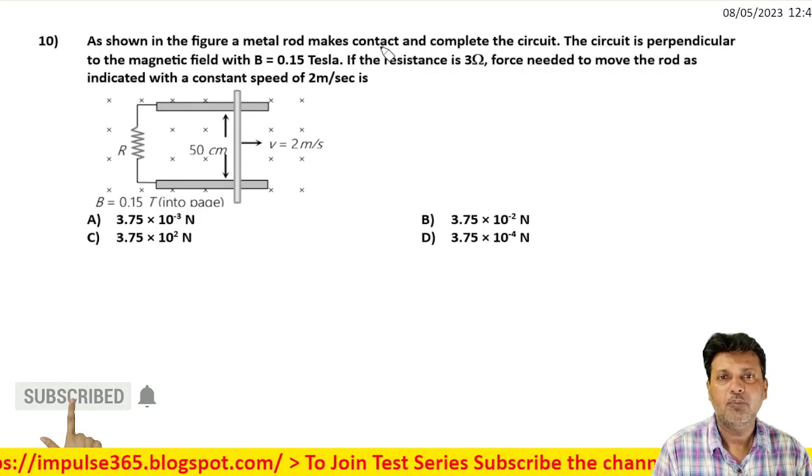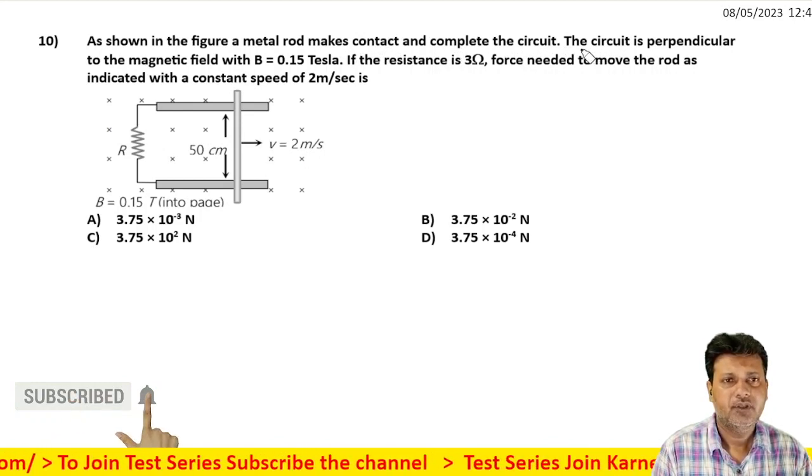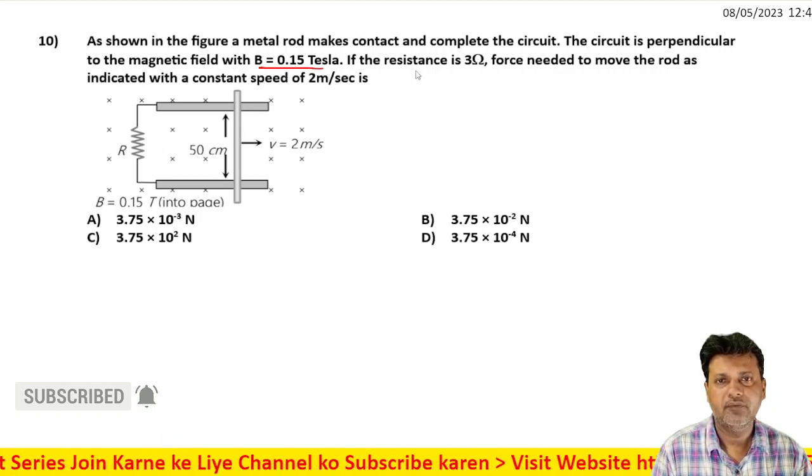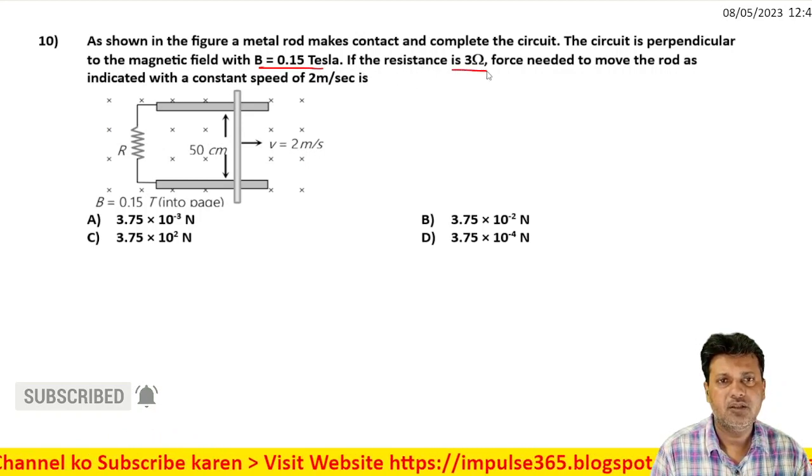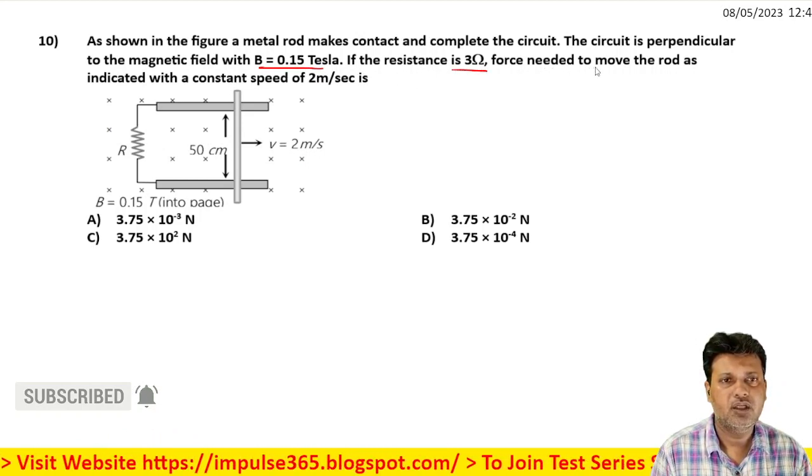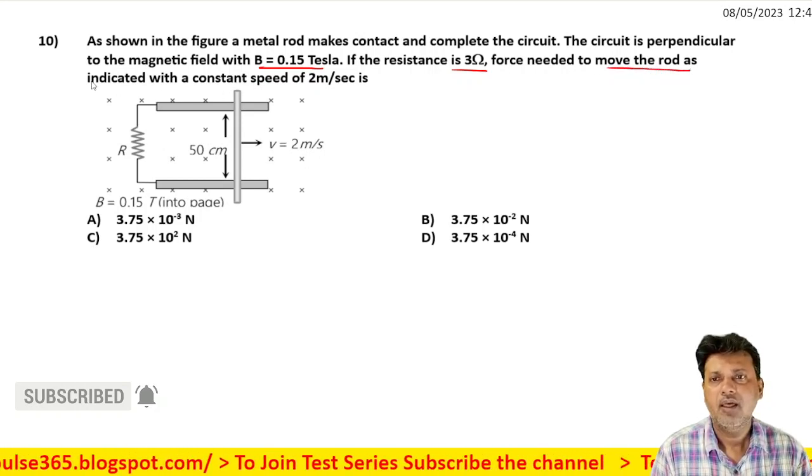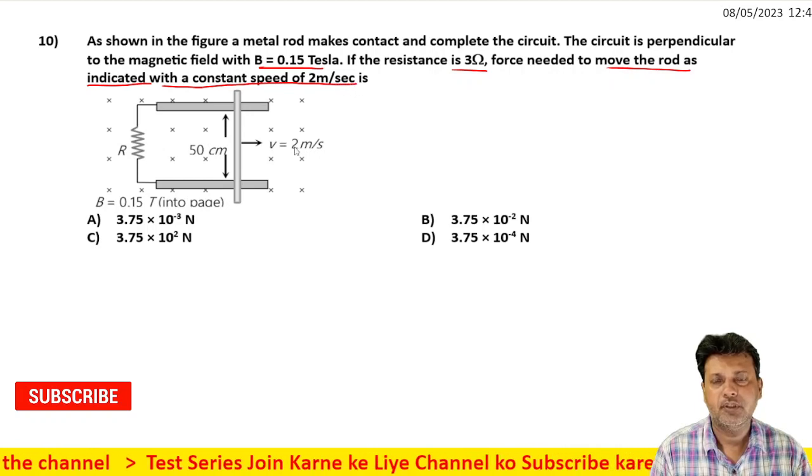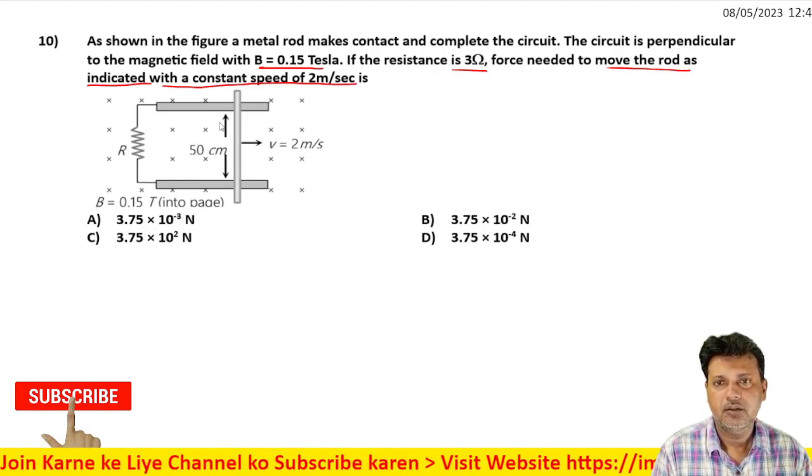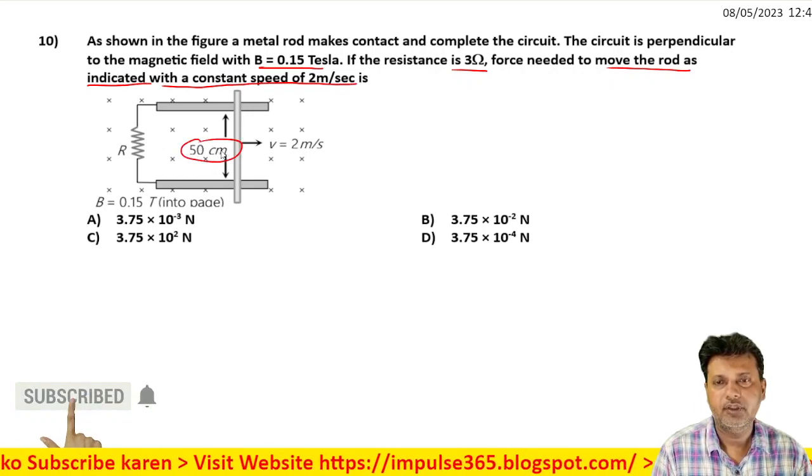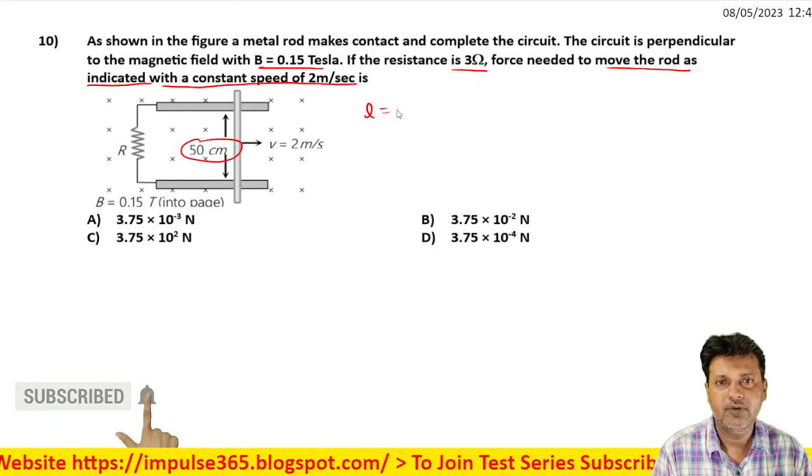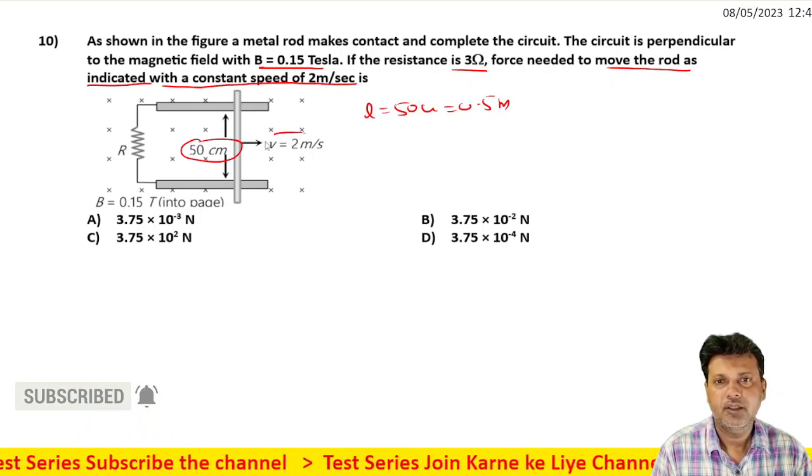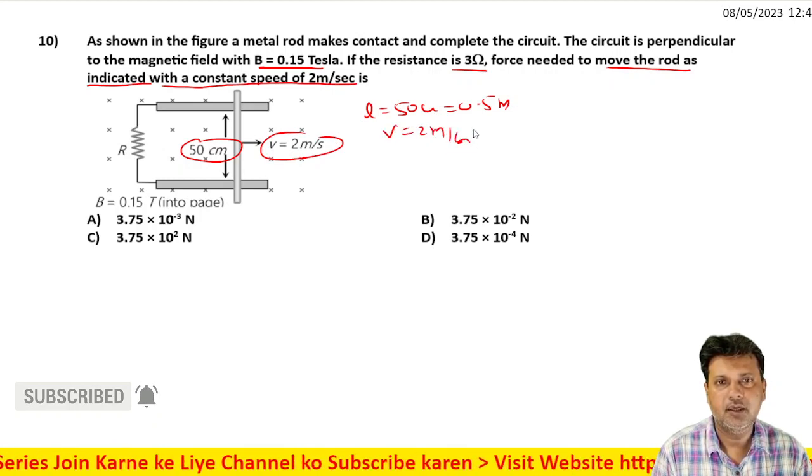As shown in the figure, a metal rod makes contact and completes the circuit. The circuit is perpendicular to the magnetic field with B = 0.15 Tesla. If the resistance is 3 ohms, find the force needed to move the rod at a constant speed of 2 meters per second. The circuit length is 50 centimeters, meaning 0.5 meters. The velocity is 2 meters per second, resistance is 3 ohms.